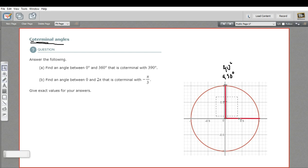So let's try out this concept with the first problem. It says, find an angle between zero and 360 degrees that's coterminal with 390. So let's plot that 390 degree angle. Let's think about that.